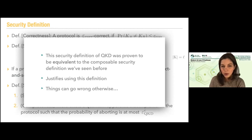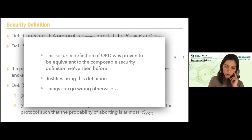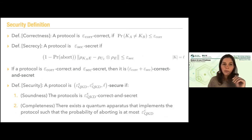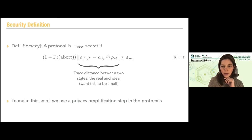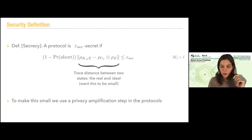If I don't show that the security definition I'm using is equivalent to a composable definition, things can go wrong when trying to compose protocols. Now that we know this is equivalent to the composable definition, the hardest part when proving security of a protocol is to prove that this distance between the two quantum states is small. To achieve this, we're going to use what we call a privacy amplification step — if you know it from classical cryptography, but now in the context of a quantum adversary.